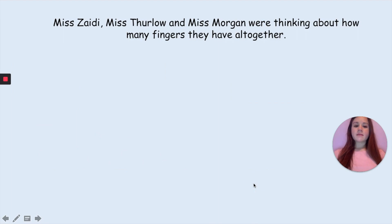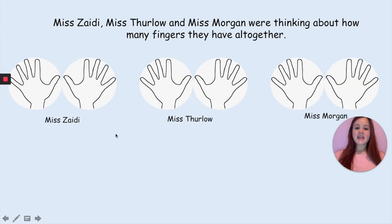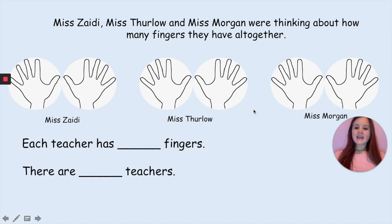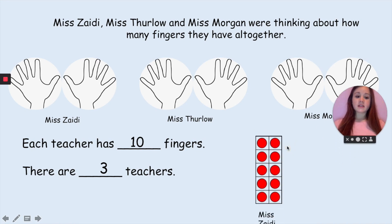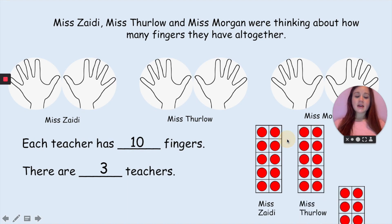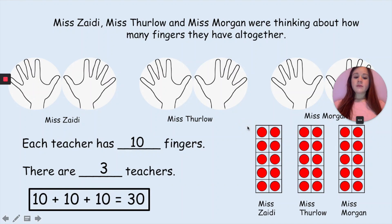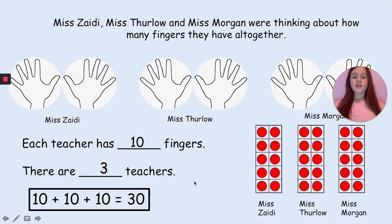Miss Sadie, Miss Stello and Miss Morgan were thinking about how many fingers they have all together. Each teacher has ten fingers — we checked: 1 through 10. So it is equal. There are three teachers. Another way we can show this is with our tens frames — one for each teacher. So our number sentence is ten add ten add ten, and we count in tens: ten, twenty, thirty. Our answer is thirty fingers all together.